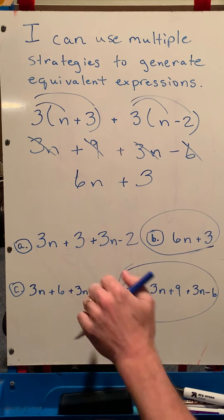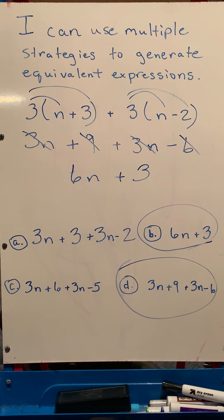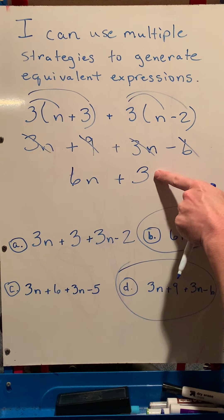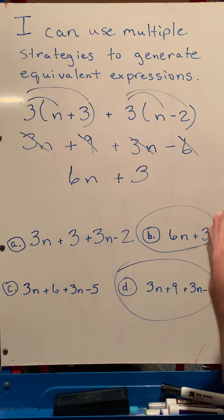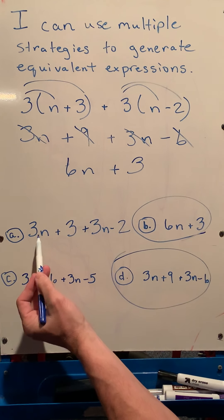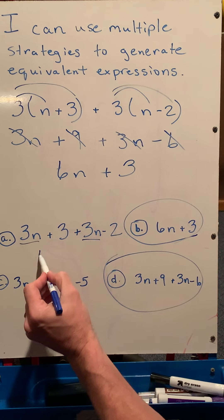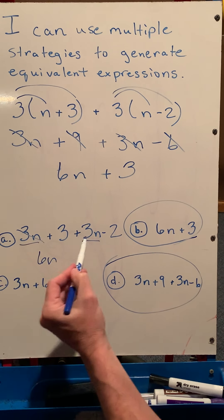If I look at the other one here, when I combine like terms down here, you're going to find out they do not equal 6n plus 3. They should all be able to get to that simplest form if they are equivalent. So if I combine terms on this one, 6n, or excuse me, 3n plus 3n is still 6n.